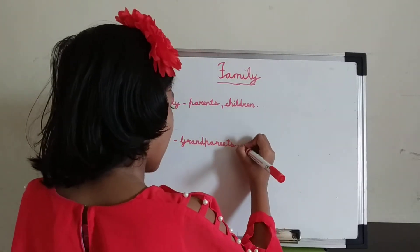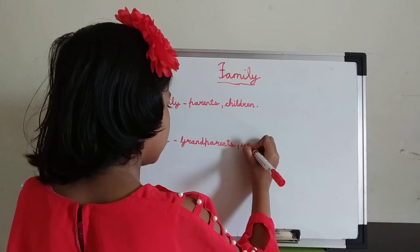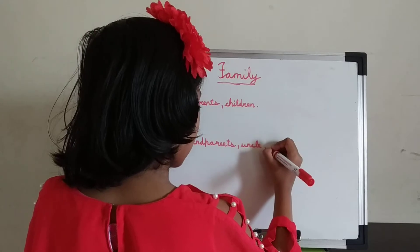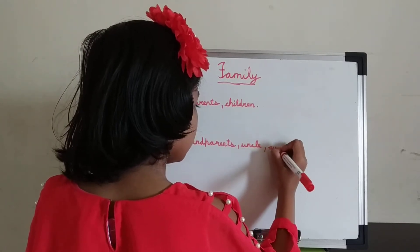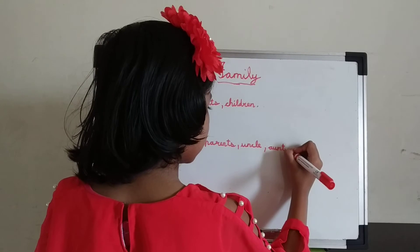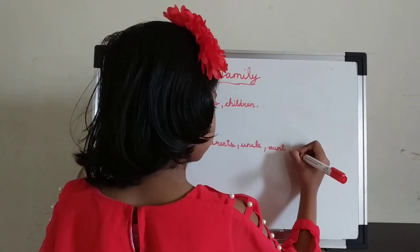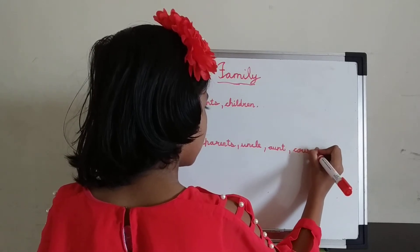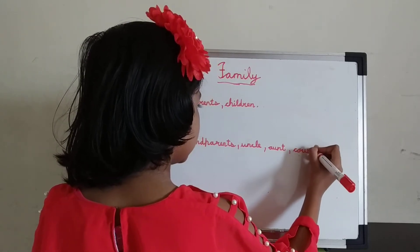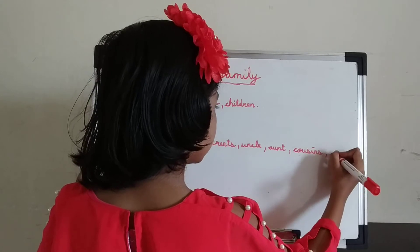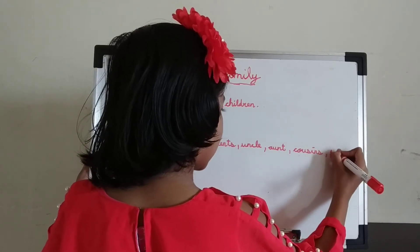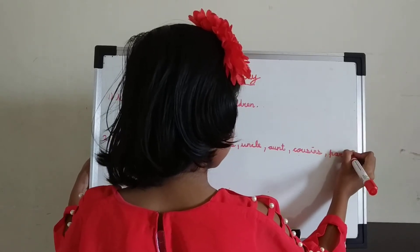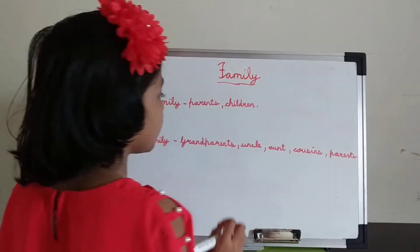Now: uncle, aunt, then cousins, cousins and parents, and last, grandparents. These are the members of the family.